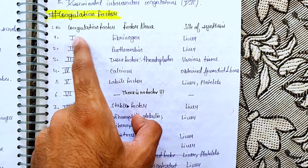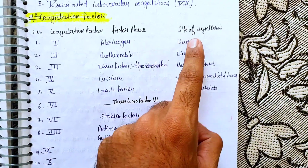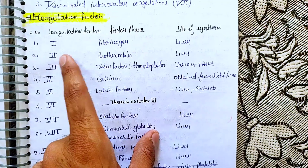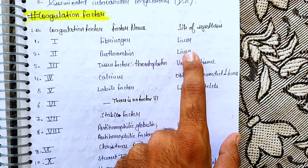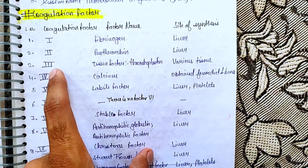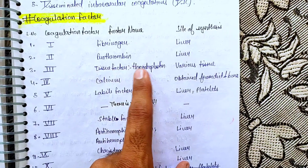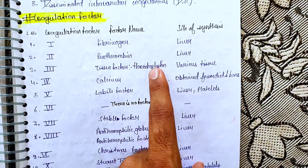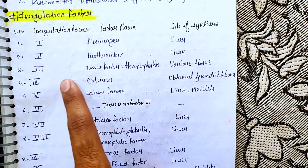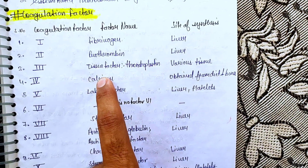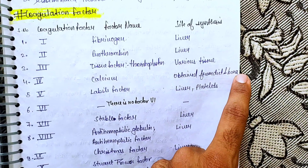The first coagulation factor is called Fibrinogen, which is produced in the liver. The second coagulation factor is called Prothrombin, which is also produced in the liver. The third coagulation factor is called Tissue Factor, also known as Thromboplastin. The fourth coagulation factor is Calcium, which is acquired from our diet and bones.